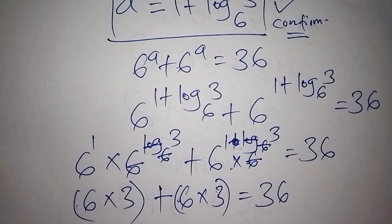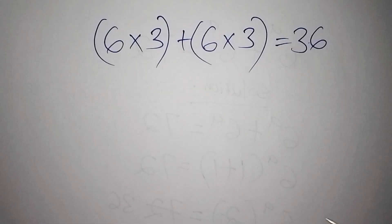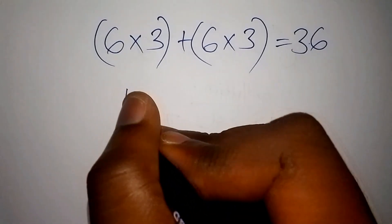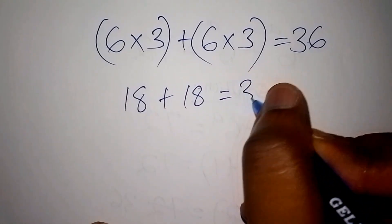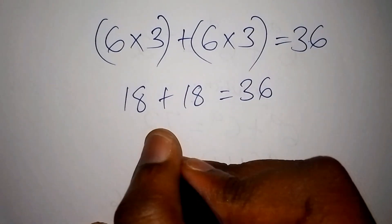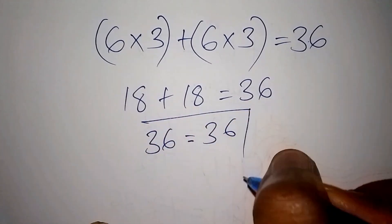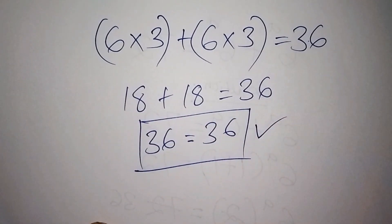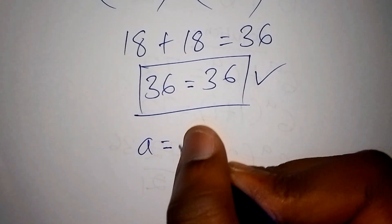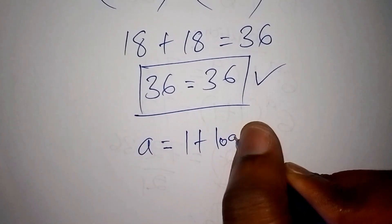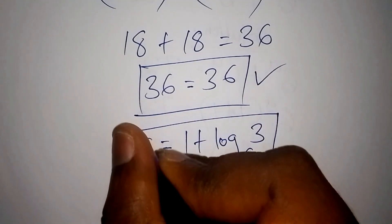Working that out, 6 multiplied by 3 gives 18, plus 6 multiplied by 3 gives another 18, so 18 plus 18 equals 36, which equals 36. This confirms our value is correct. We conclude that the value for a is equal to 1 plus the log of 3 to the base of 6. That is our correct answer.